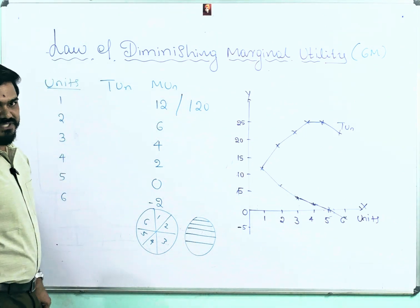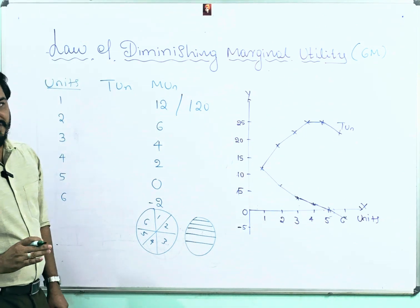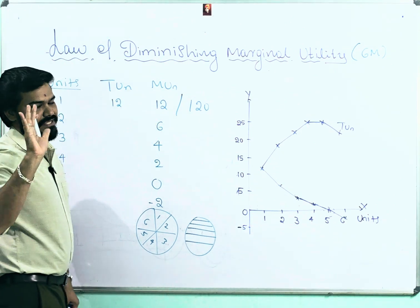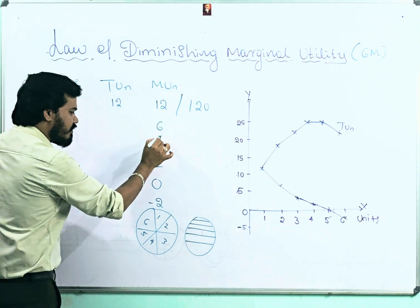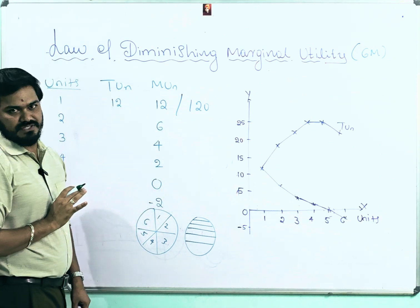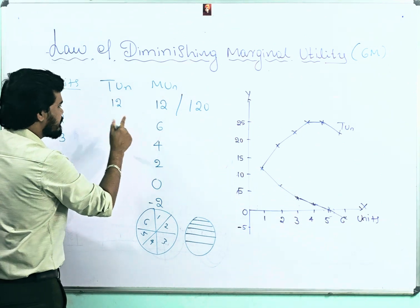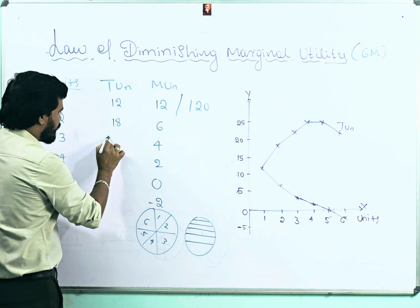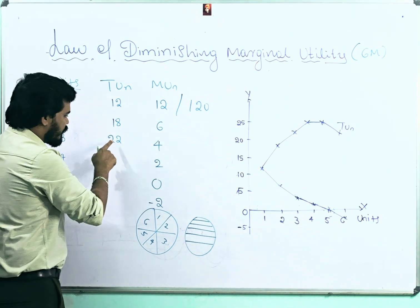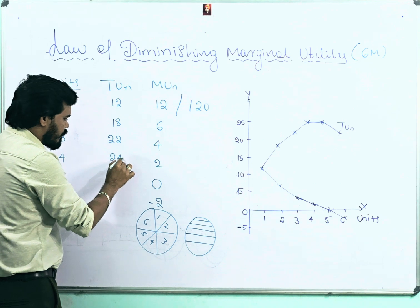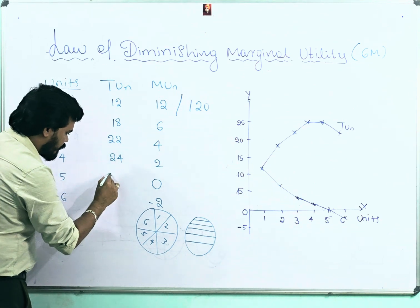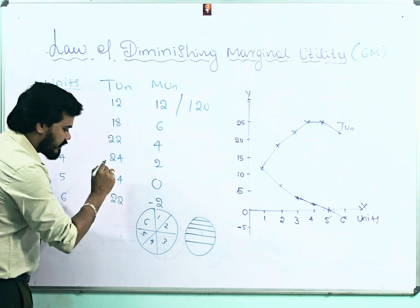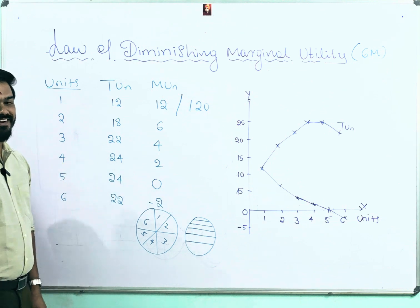To obtain total utility from marginal utility: the first unit's total utility and marginal utility are the same. If you add all the marginal utilities, you get total utility. For example: 12 + 6 = 18; 18 + 4 = 22; 22 + 2 = 24; 24 + 0 = 24; 24 − 2 = 22. This confirms the definition: total utility increases then declines while marginal utility continuously decreases.